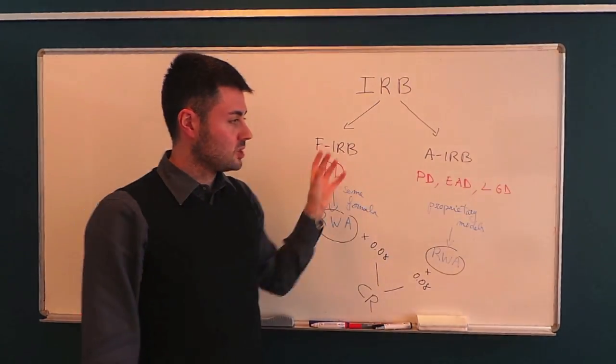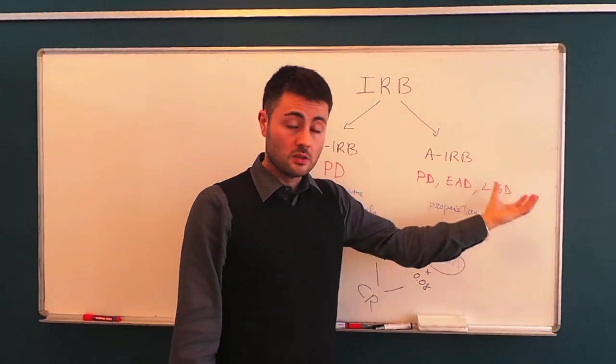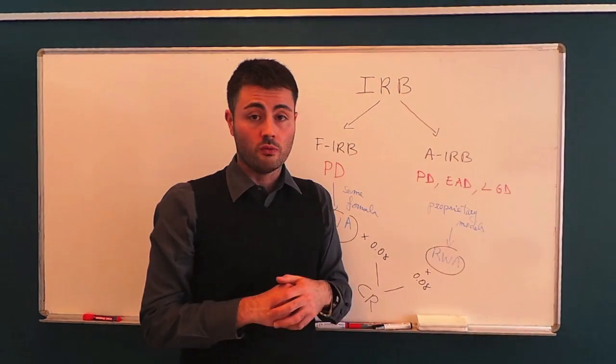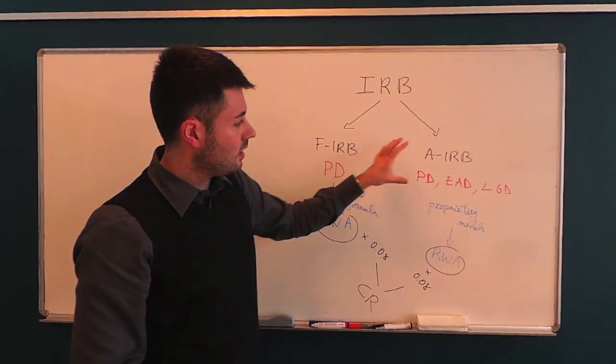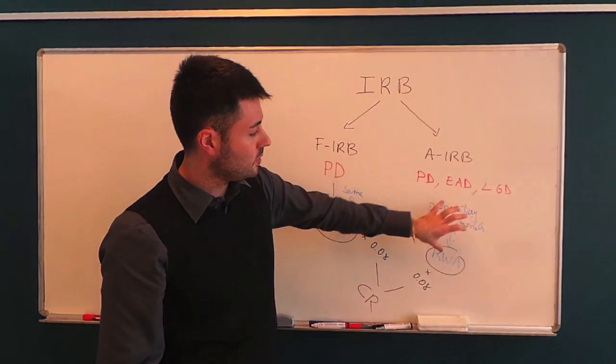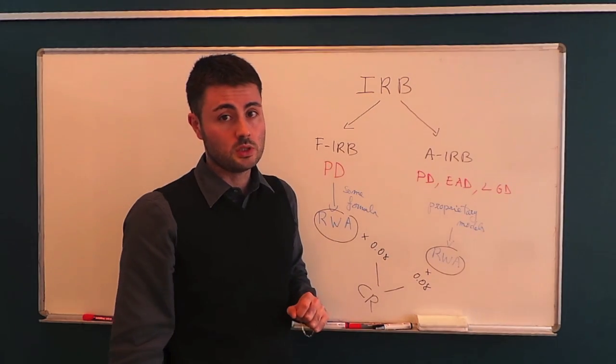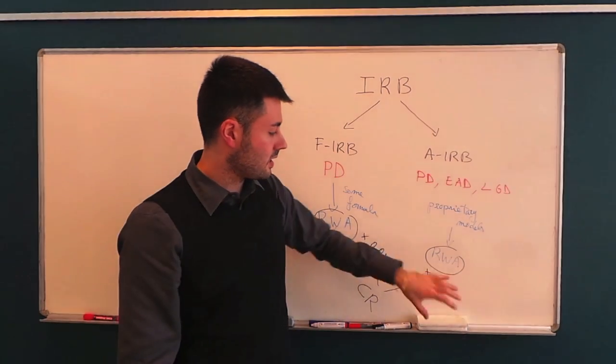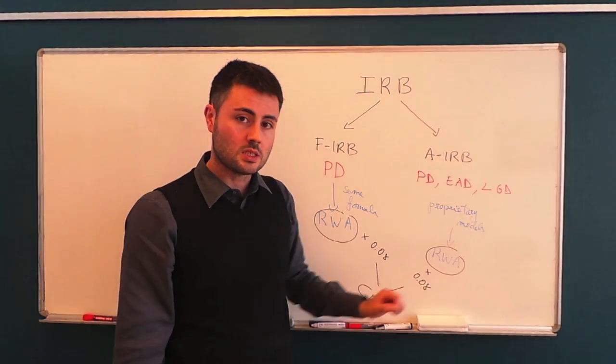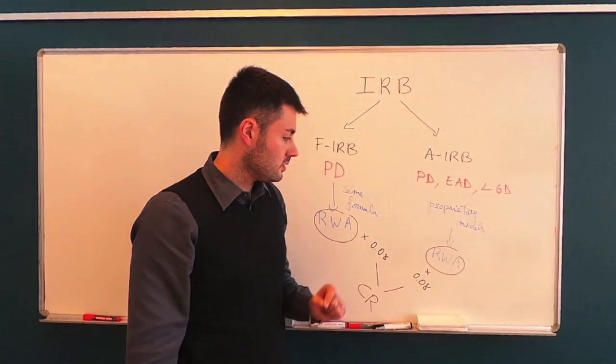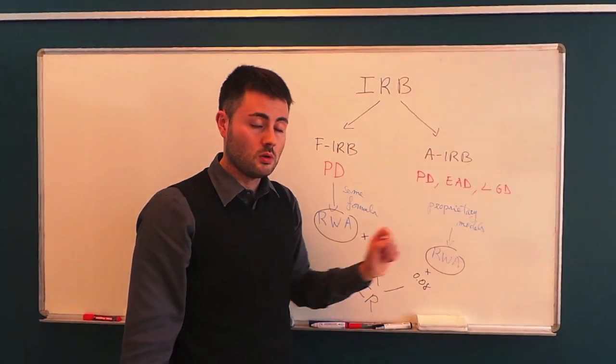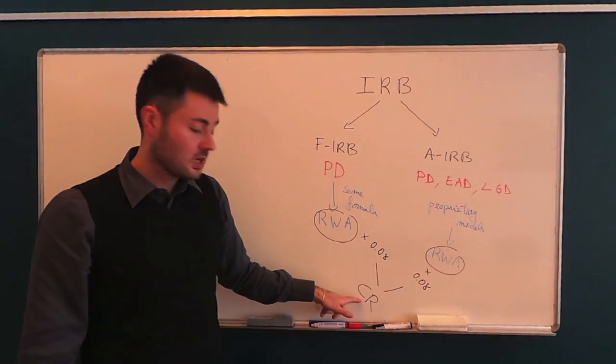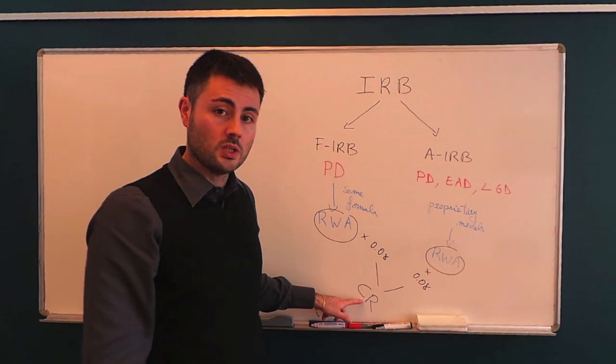And under the advanced internal rating approach, on the contrary, banks have much more freedom. They can compute many different quantities, and on the platform you will find the definition of all these quantities. These quantities are essentially computed through proprietary models. And once they have these quantities, they can compute the risk weighted assets. And given the risk weighted assets computed under the advanced approach, 8% capital requirements for credit risk.